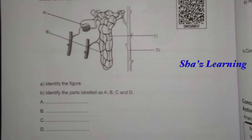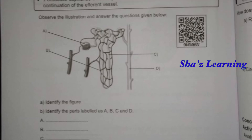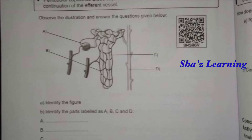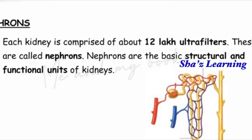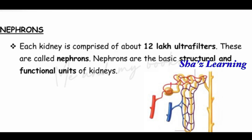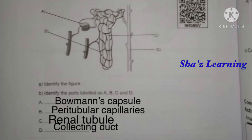Next, this is a picture with labels A, B, C, and D. The figure shows nephrons. Each kidney is comprised of about 1.2 million nephrons. Nephrons are the basic structural and functional units of kidneys. Label A is Bowman's Capsule, B is Peritubular Capillaries, C is Renal Tubule, and D is Collecting Duct.